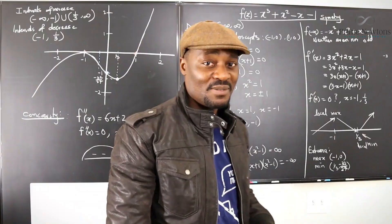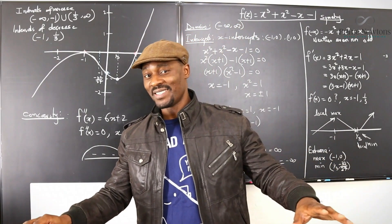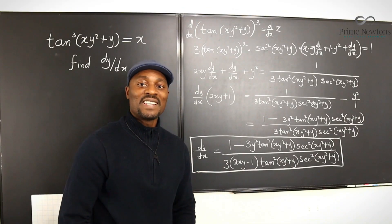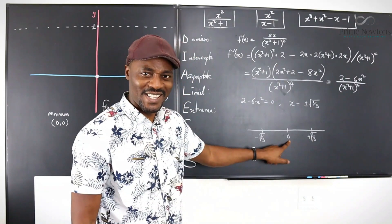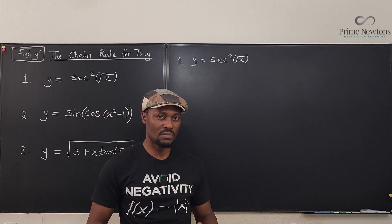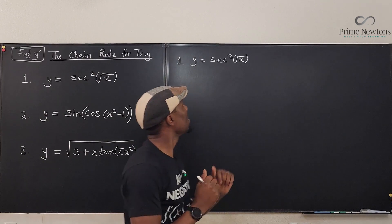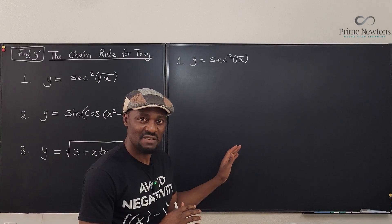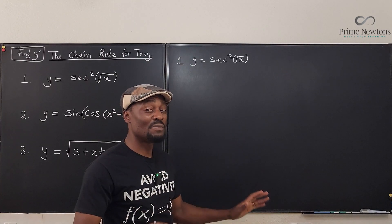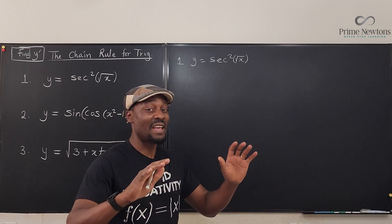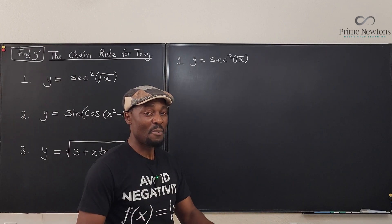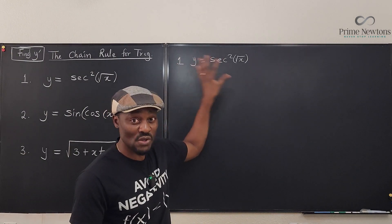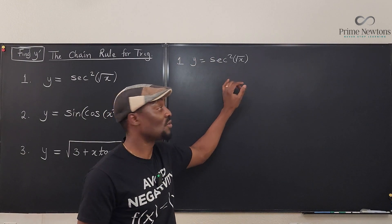Let's get into it. So the first problem, number one, is secant squared of the square root of x. It looks very easy, very simple. But you have to avoid the general mistakes that I have seen students make. My first recommendation is to rewrite the problem. Don't leave it this way. Don't start solving it.